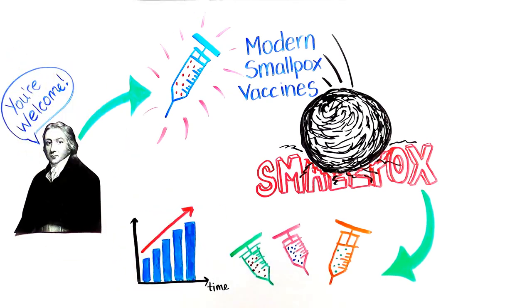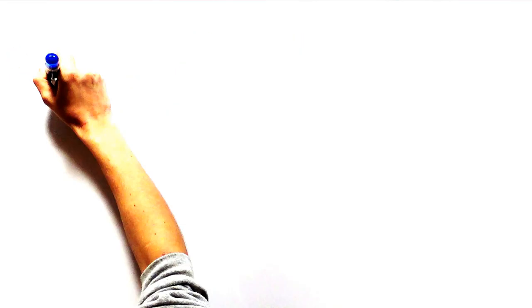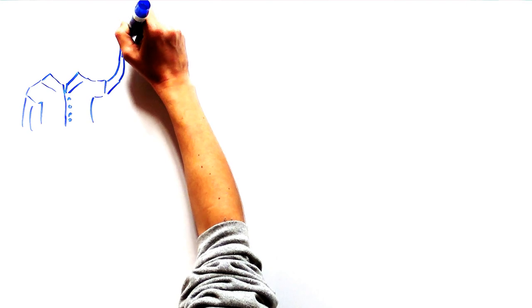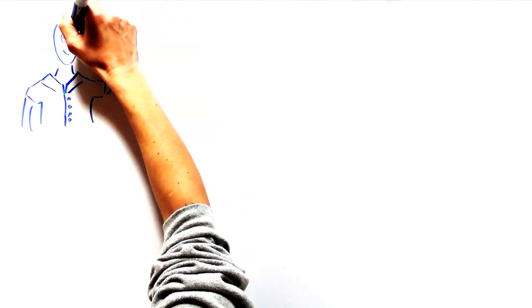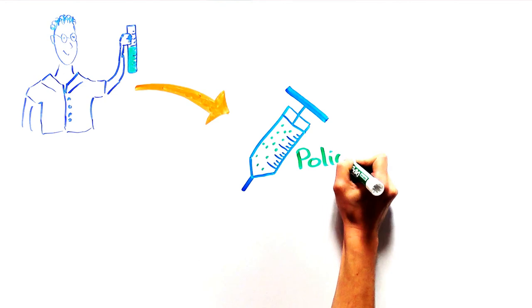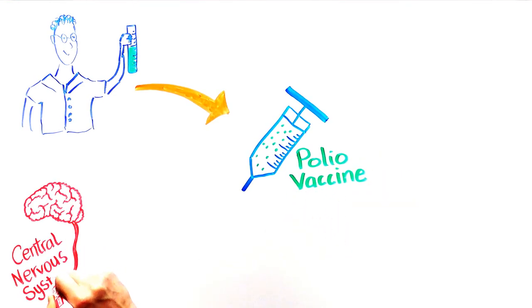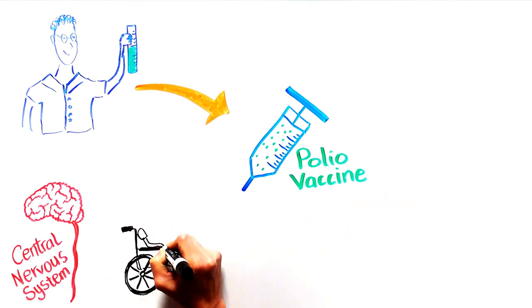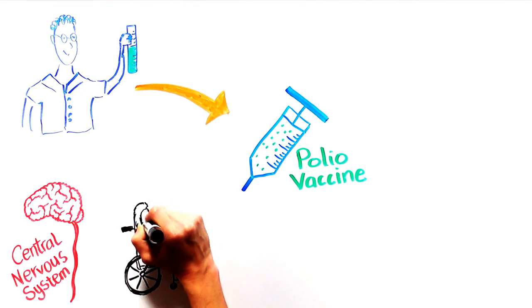Vaccine research continued to boom throughout the mid-20th century. Scientists began growing viruses in laboratories leading to new discoveries. One huge triumph of the time was the creation of the polio vaccine. Polio is a deadly virus that infects the central nervous system and can cause paralysis. It went from being a very common, dangerous disease to one that is very rare because of the polio vaccine.